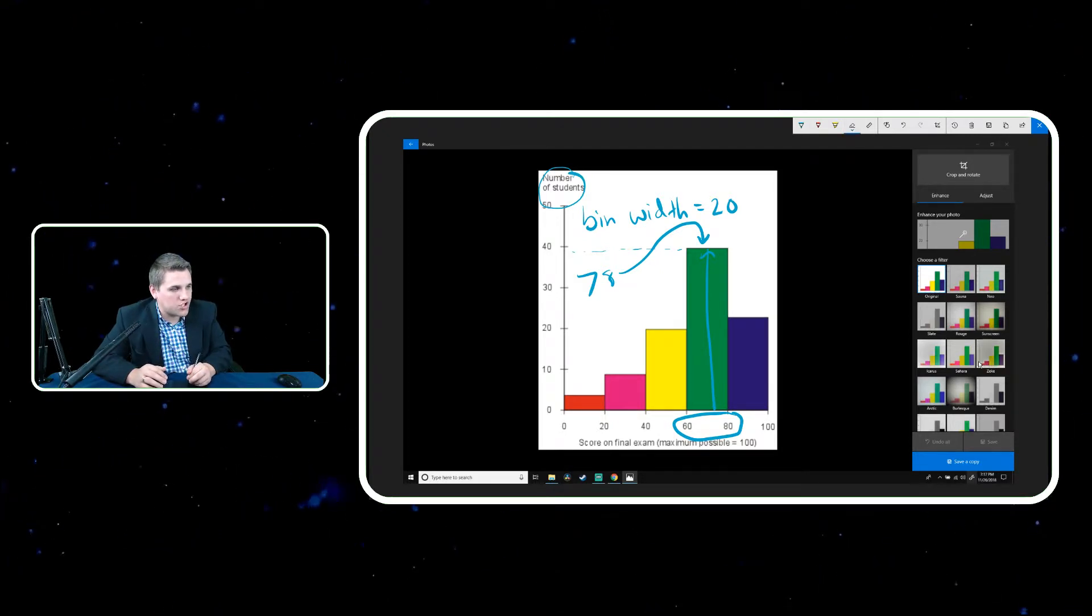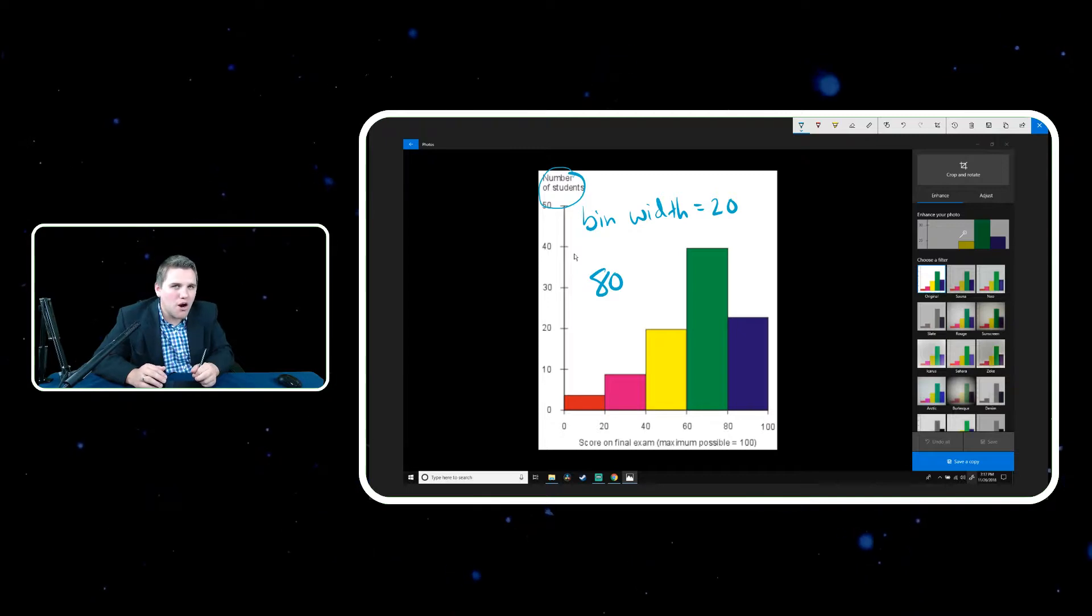Now, a really good question that I get every once in a while from my students is, what about these numbers in between bars? So for example, what if we have the number 80? Which bar does that go to? Does it go to this bar or does it go to that bar? Because keep in mind, 80 is right in between those two bars.